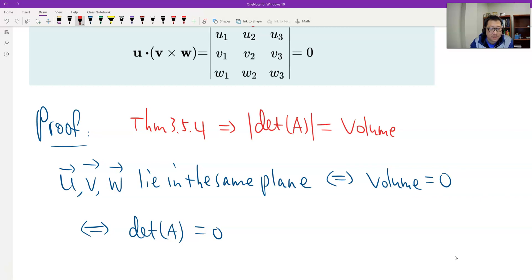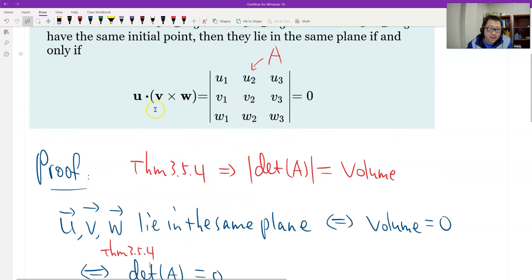So this is the theorem 3.5.4 gives us. Because the determinant is the absolute value, determinant is the volume. And you can see, is this the result already? Yes. Determinant of A equals zero, equivalent to the three vectors lying in the same plane. We have the result of theorem 3.5.4. Therefore, this is the proof.